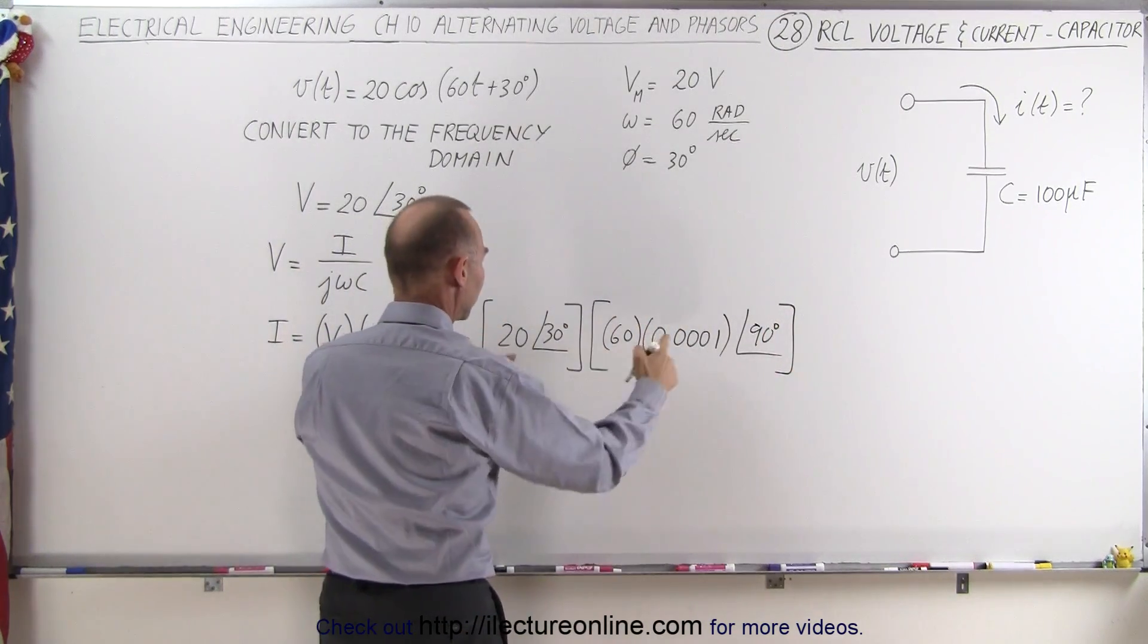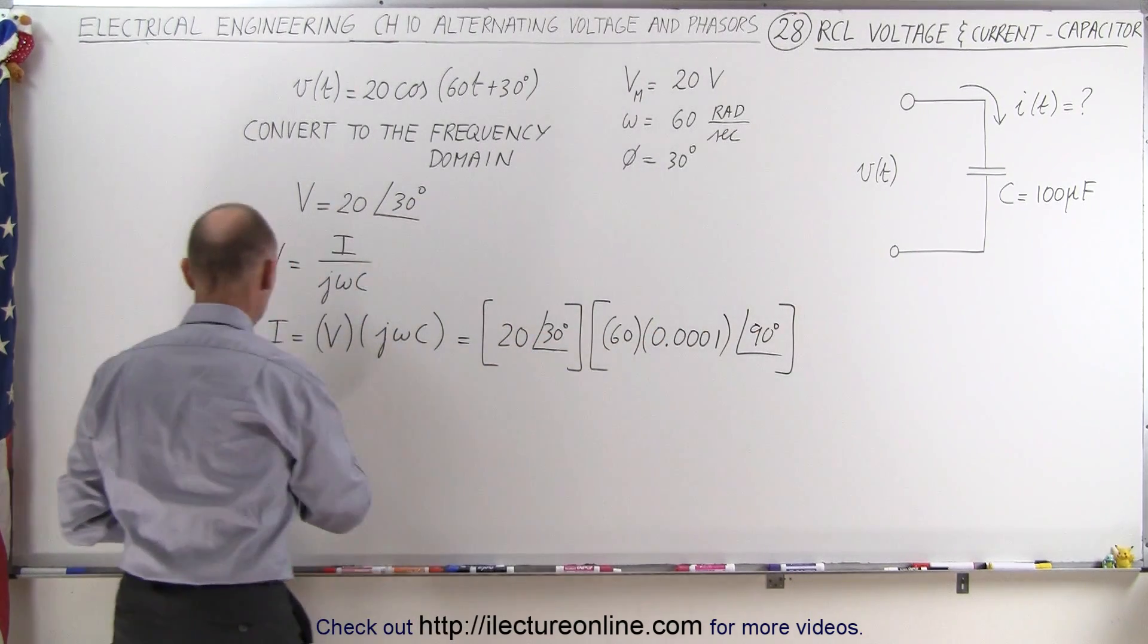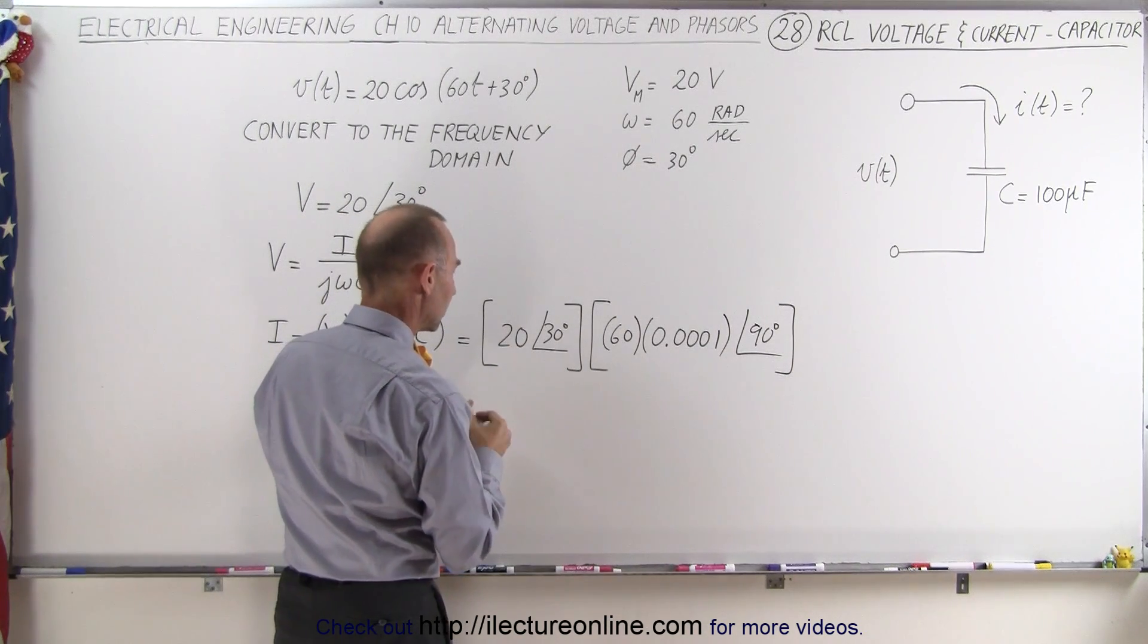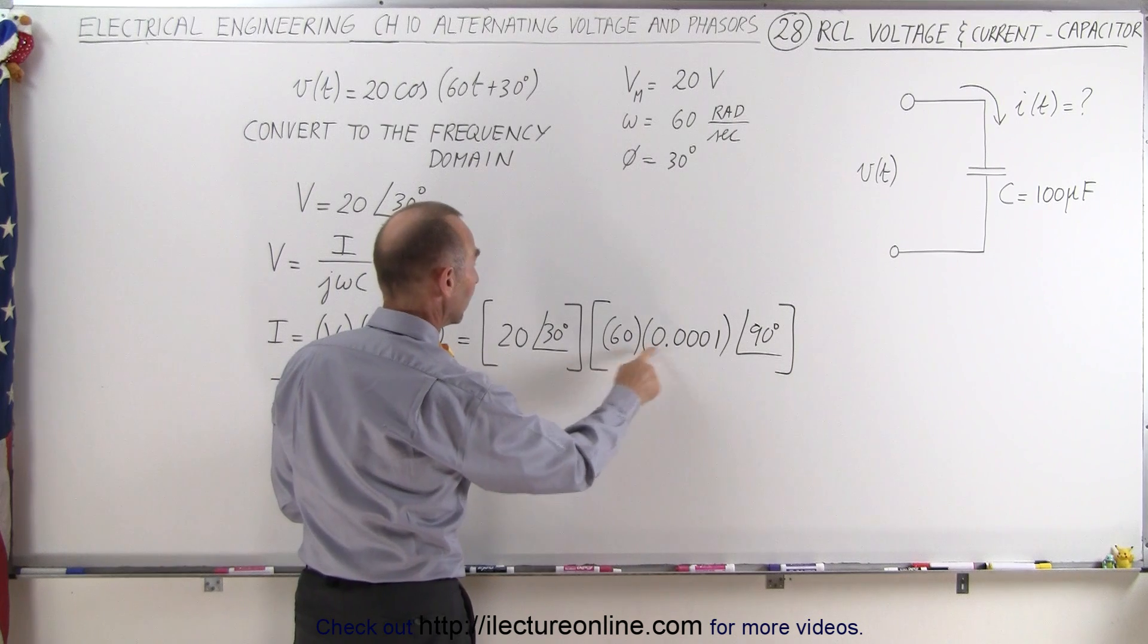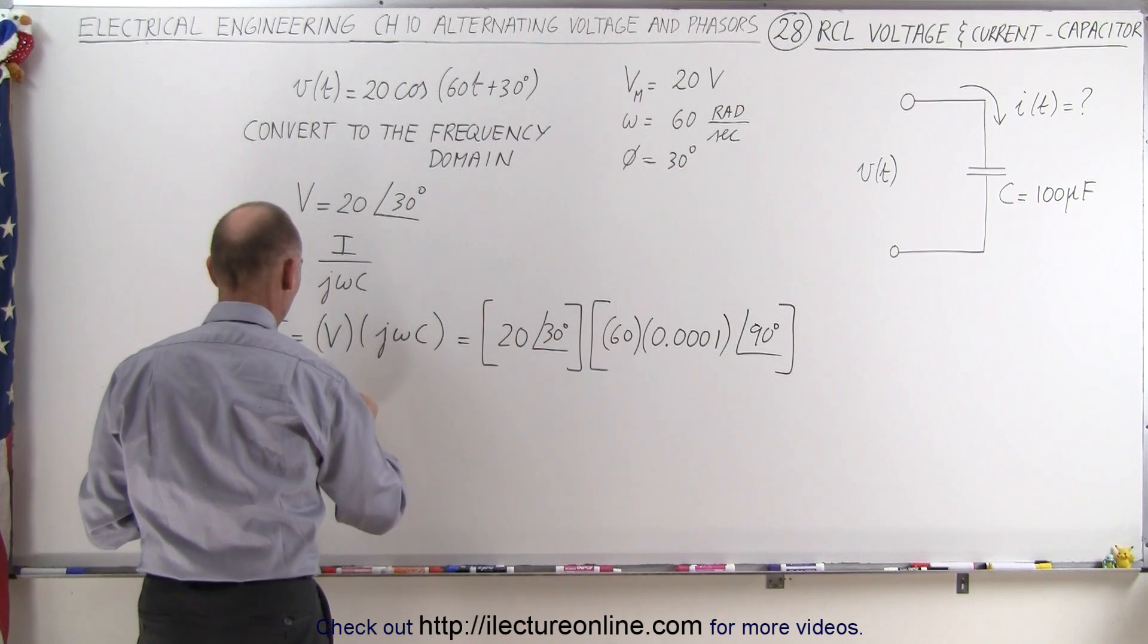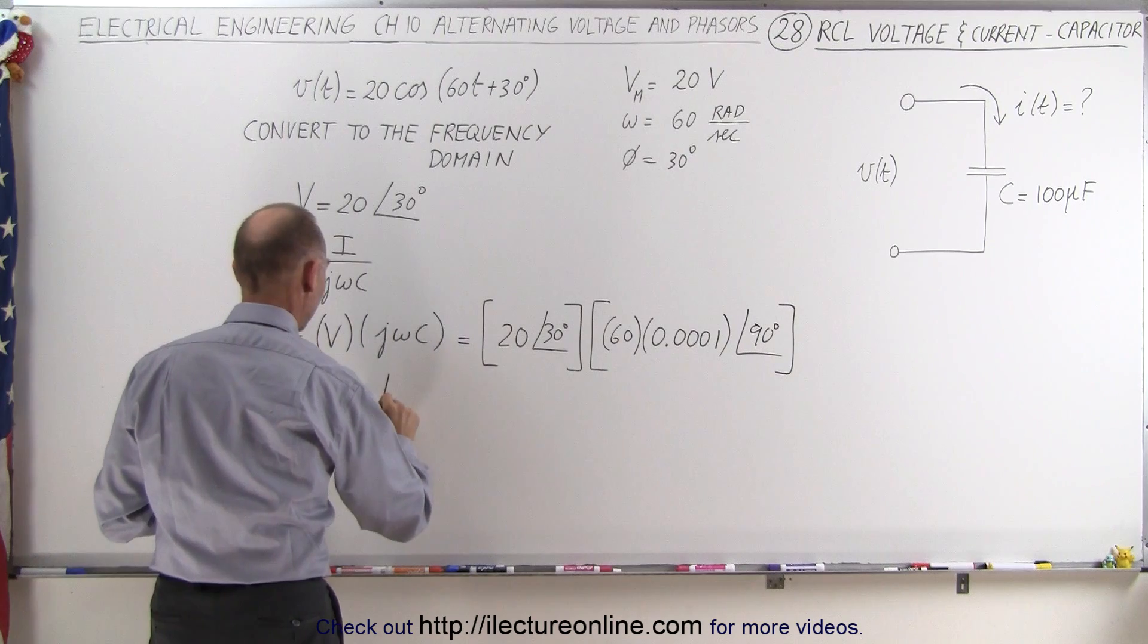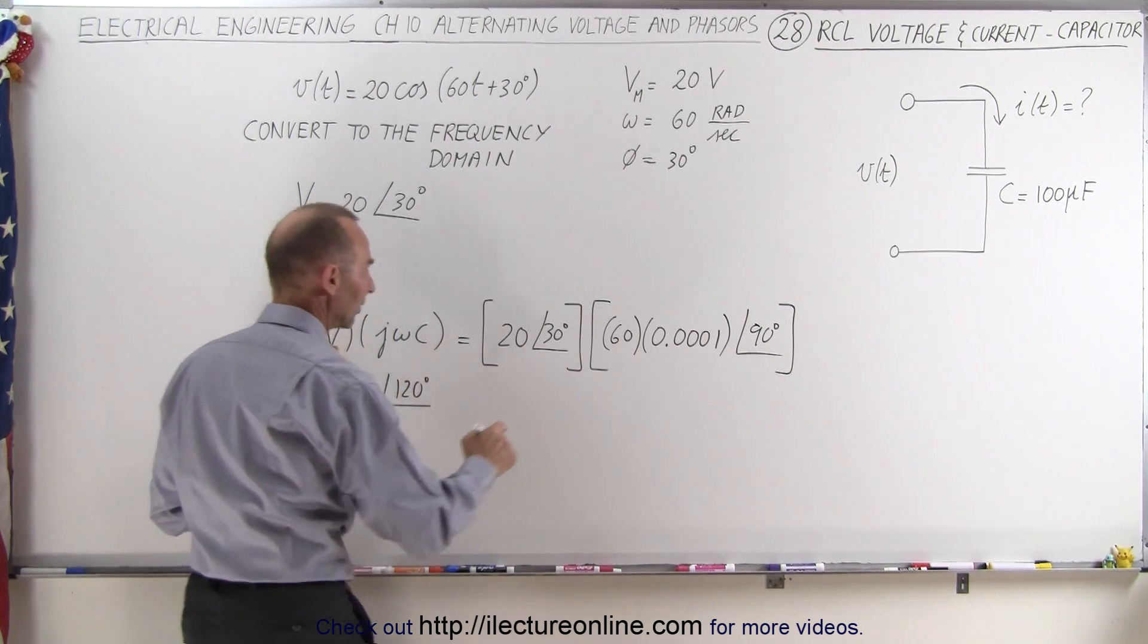And now when we multiply these together we multiply the amplitudes together and add the phase angles, which means that the current I is equal to, well let's see here, that would be 1200 times this, 0.12, and a phase angle of 90 plus 30 which is 120 degrees.